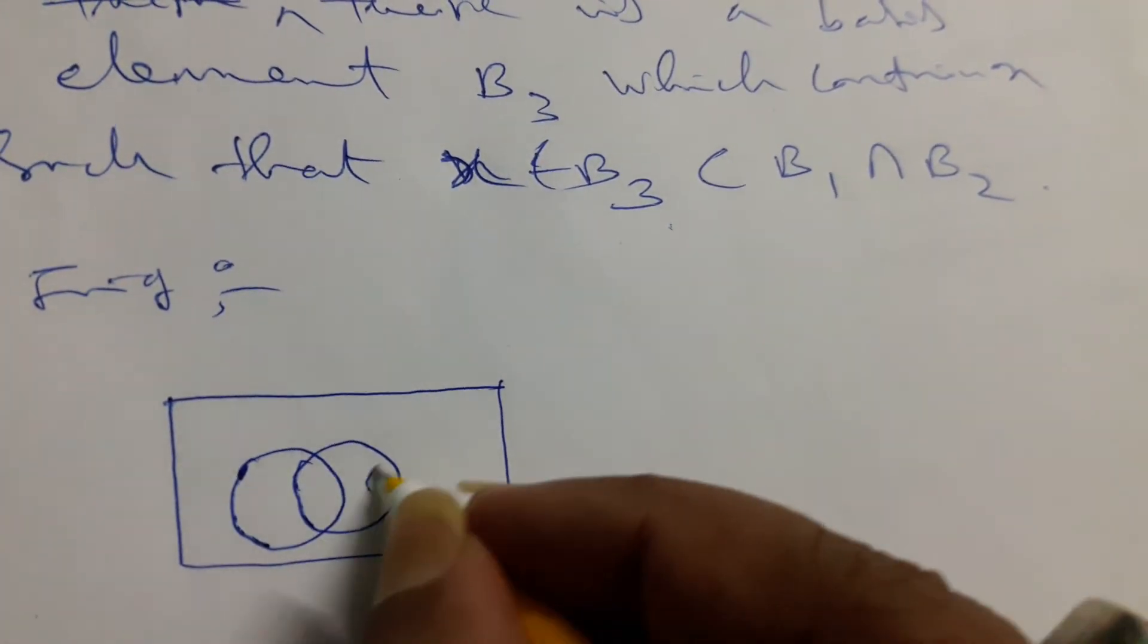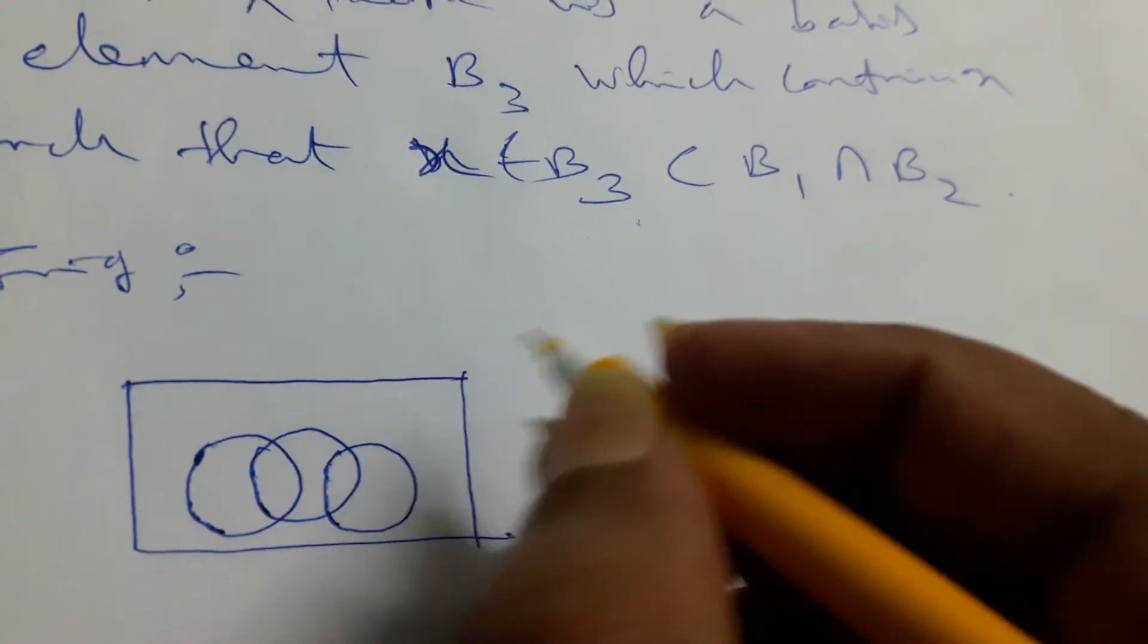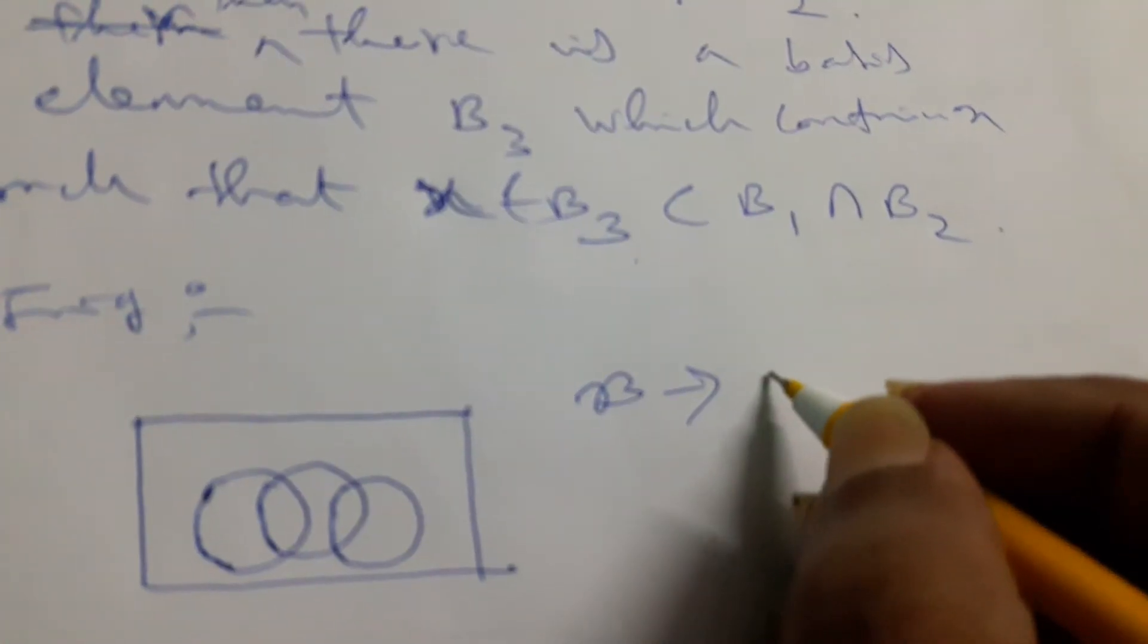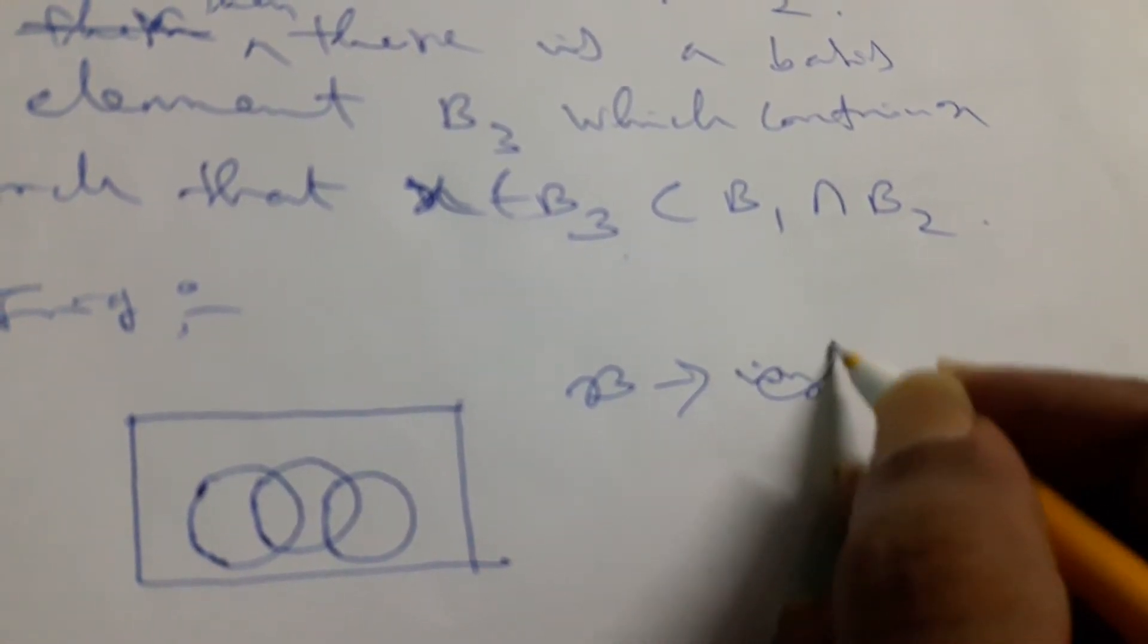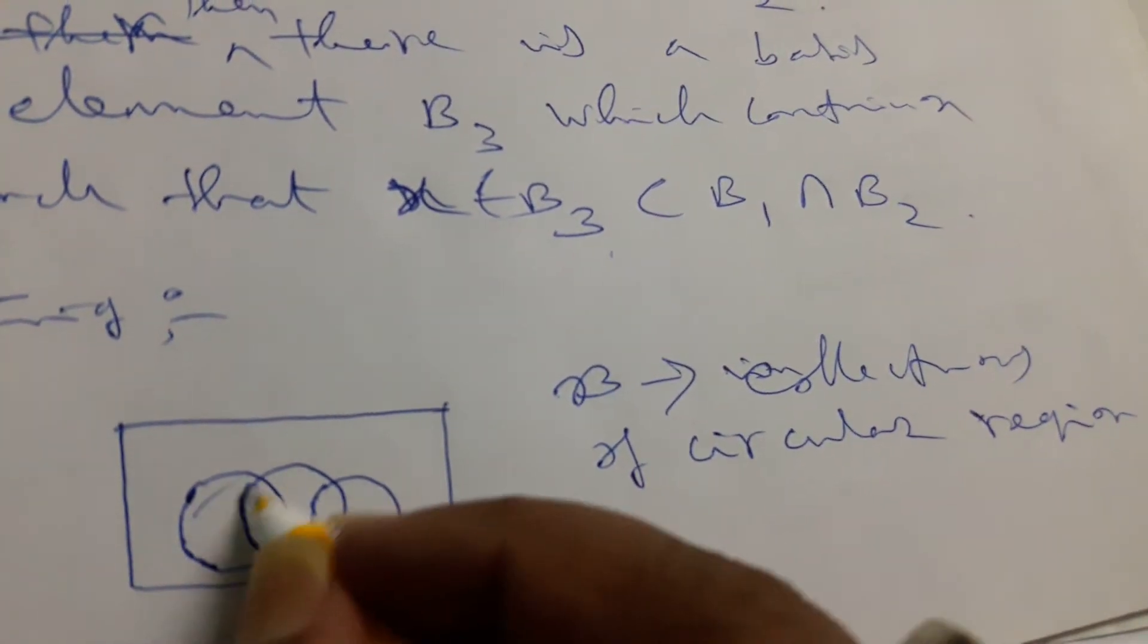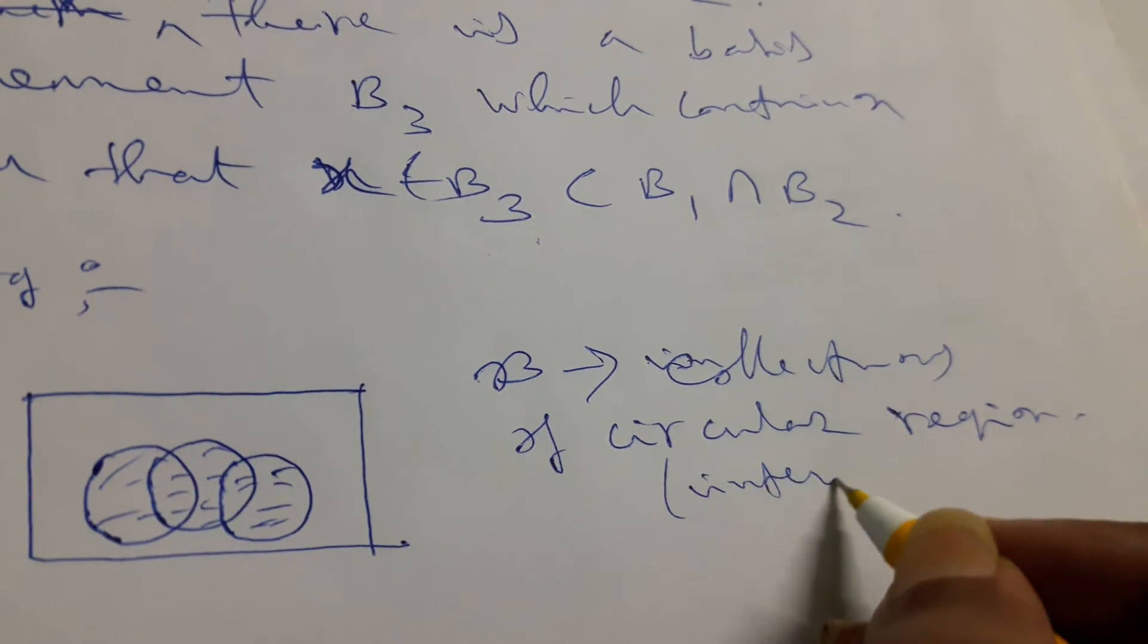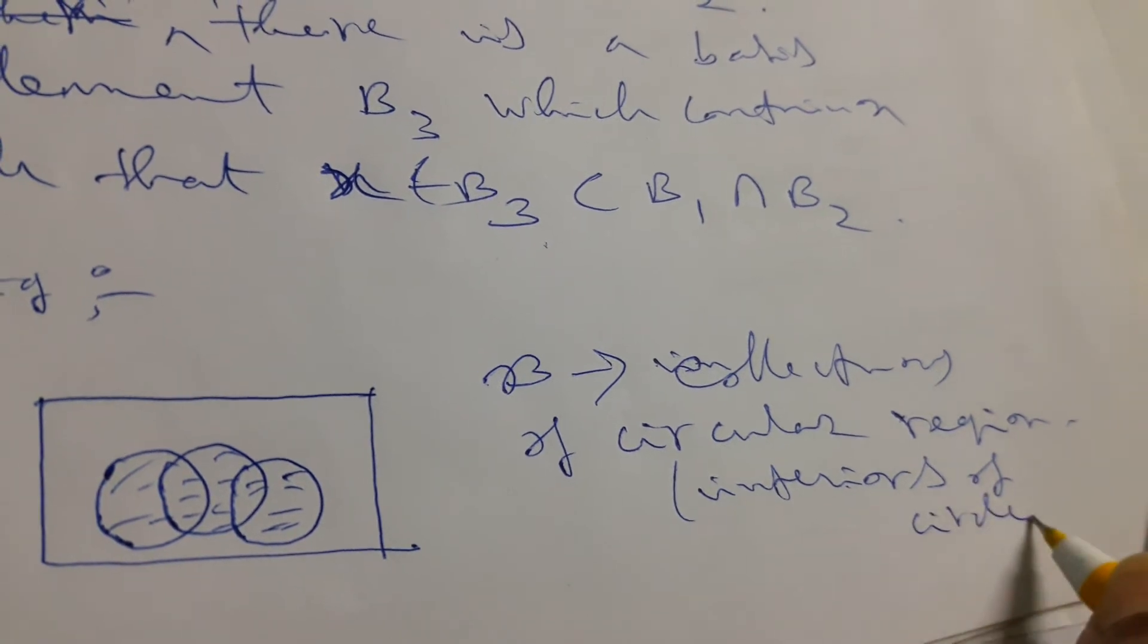And if cursive B denotes the interior of the circles, that means the collection of circular regions, the entire collection of circular regions, meaning the interior of all circles.